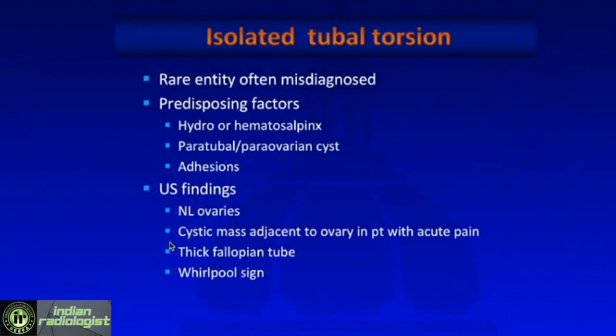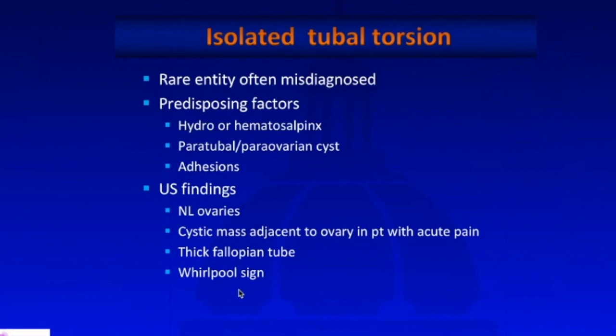Isolated tubal torsion is really uncommon and often misdiagnosed. Predisposing factors include hydro- or hematosalpinx, the presence of paratubal or parovarian cysts, and adhesions. On imaging, the ovaries are going to be normal, but there is a cystic mass adjacent to the ovary in a patient with usually severe pain and symptoms mimicking ovarian torsion. Sometimes you'll see a thickened fallopian tube. If you think about the diagnosis, try to find the whirlpool sign of the twisted fallopian tube.